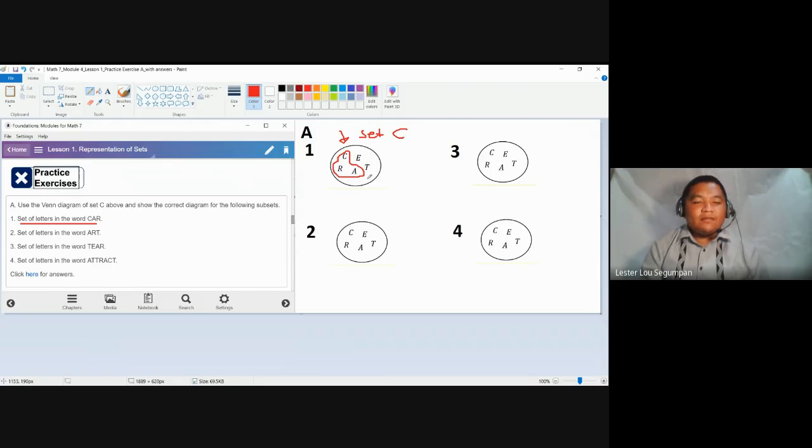Number two, set of the letters in the word art, A-R-T. So simply write a symbol, combining them. Why do we need to enclose this, just like the given set? The Venn diagram should be enclosed because it determines a group. When there are two different Venn diagrams, two Venn diagrams which are not connected, in short, they are two different sets.